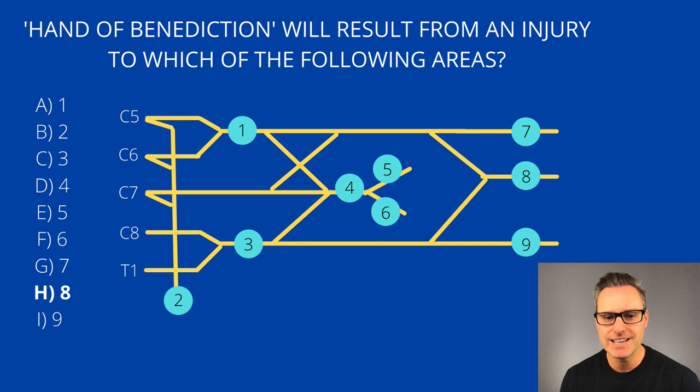The correct answer here is H, location 8. So what is the hand of benediction? Well, this is a physical finding caused by a decrease in thumb function as a result of injury to which nerve? Hopefully, you know, the median nerve. Now, the issue here is an inability to flex the MCP and IP joints of the middle and the index fingers while there's the ability to flex the MCP and IP joints of the ring and little fingers. Now, be careful. You don't want to confuse this with ulnar claw.